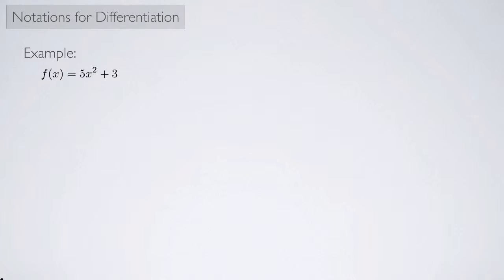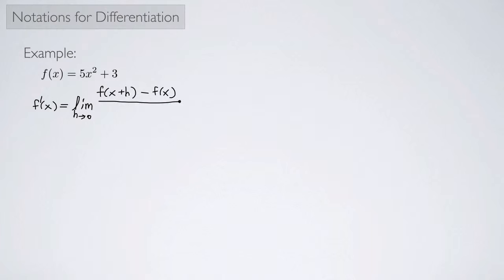I want to look at some different notations for differentiation, but before I do that I need an example to work with. So here's my example: the function f of x equals 5x squared plus 3, and I'm going to calculate the derivative of this function using the formula with the limit as h approaches 0 of f of x plus h minus f of x, all over h.